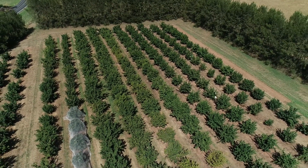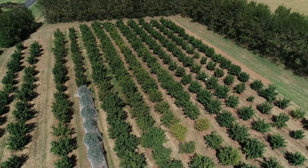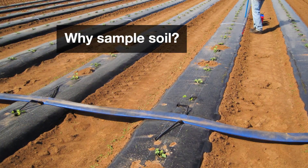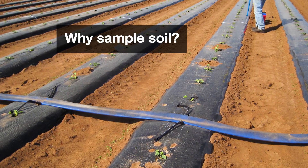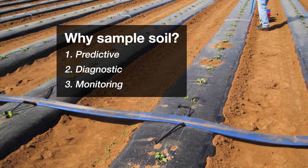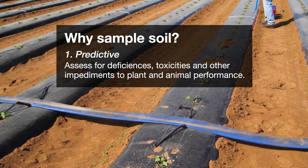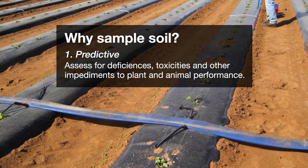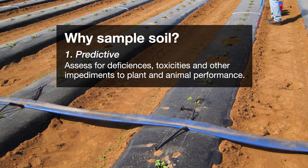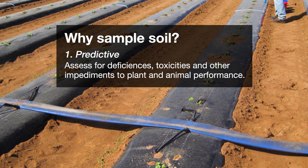The key thing to do when sampling is to make sure that the sample you collect and send for analysis is representative of your test area. In this video, we'll outline soil sampling for predictive, diagnostic and monitoring purposes. Predictive sampling is used to inform management decisions such as liming or fertiliser application rates. Soil is assessed for deficiencies, toxicities and other impediments to plant and animal performance.